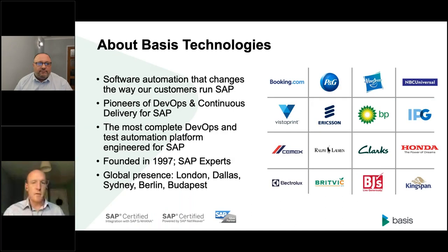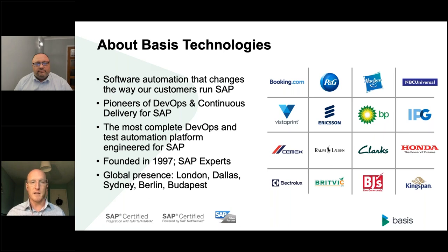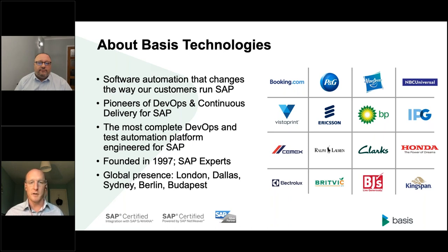So why are we here at VASIS Technologies talking to a DevOps audience? We're a company that makes software automation helping customers change the way they run, manage, adapt, and maintain their SAP systems — critical systems at the core of their business. We're really the pioneers for DevOps and continuous delivery in the SAP space, providing tooling and solutions to help organizations take a new approach to SAP. We offer the most complete DevOps and test automation platform specifically engineered for SAP, with more than 20 years of expertise.